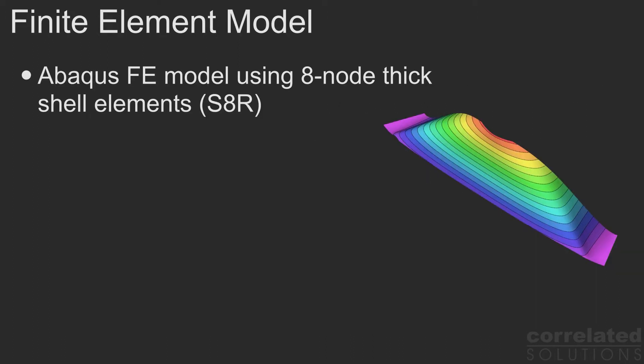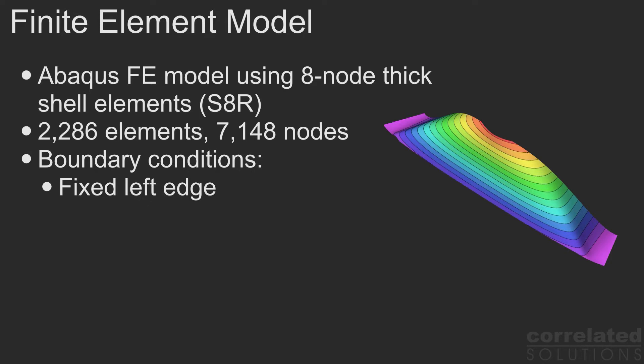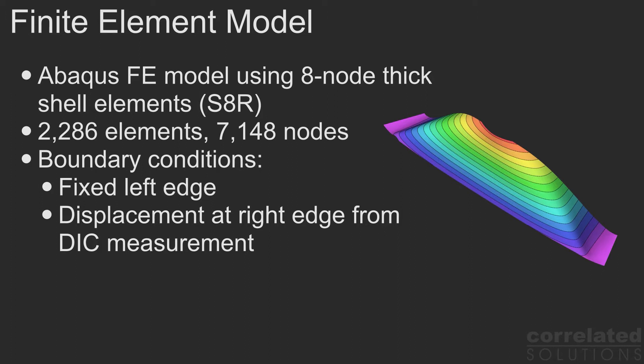Simulation of the toe deformation was performed using the commercial code ABACUS. The toe was modeled as an orthotropic elastic material with 2,300 quadratic shell elements and slightly more than 7,000 nodes. The left edge of the specimen was fixed. On the right side, the displacement of the bottom corner node and the rotation along the edge were used as boundary conditions. The values for these boundary conditions were obtained from the DIC measurements using a least squares fit.